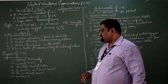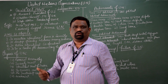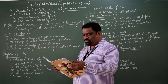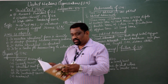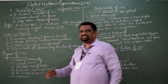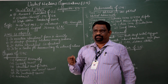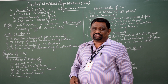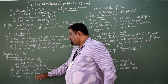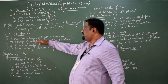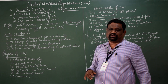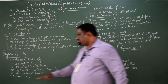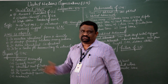Coming to the Trusteeship Council, the fifth very important organ of the United Nations: the Trusteeship Council is the agency that promotes friendship, friendly relationships, as well as peace and security among the nations. The Trusteeship Council works in terms of promoting international peace and security among all members.